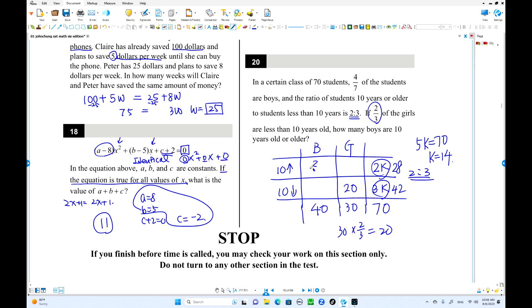So how many boys are 10 years old? You're going to find these numbers. From here, 30 minus 20 is 10. So 28 minus 10 is 18. That's the answer. So 18 is the answer.